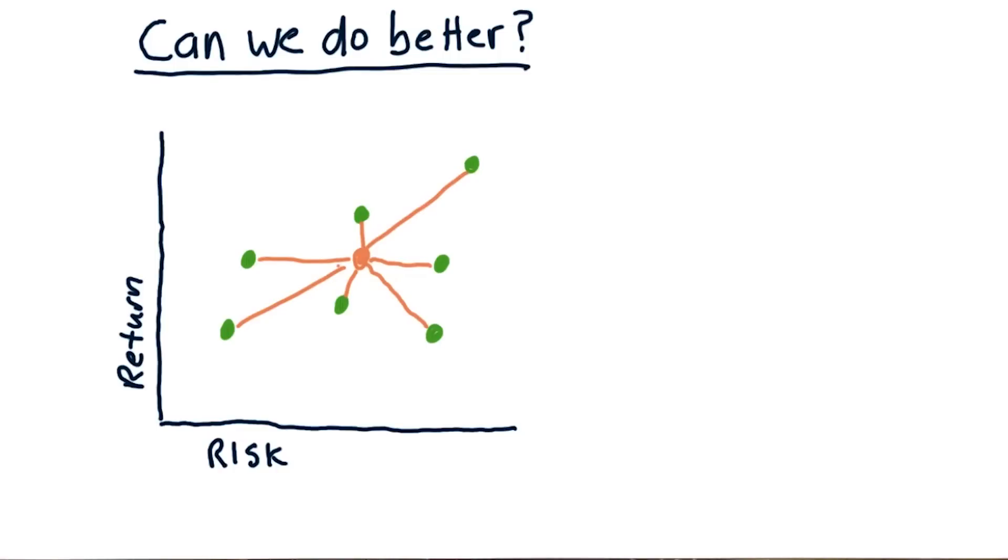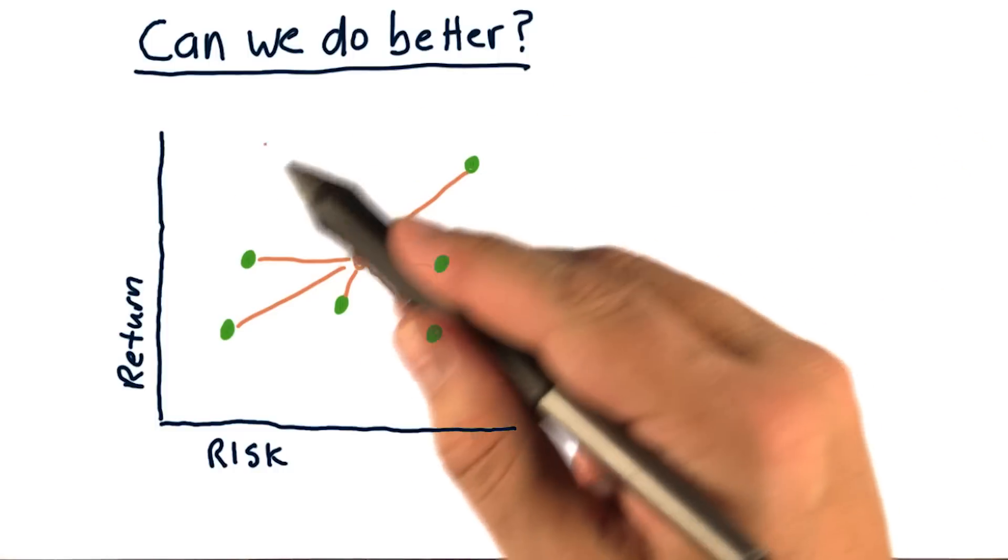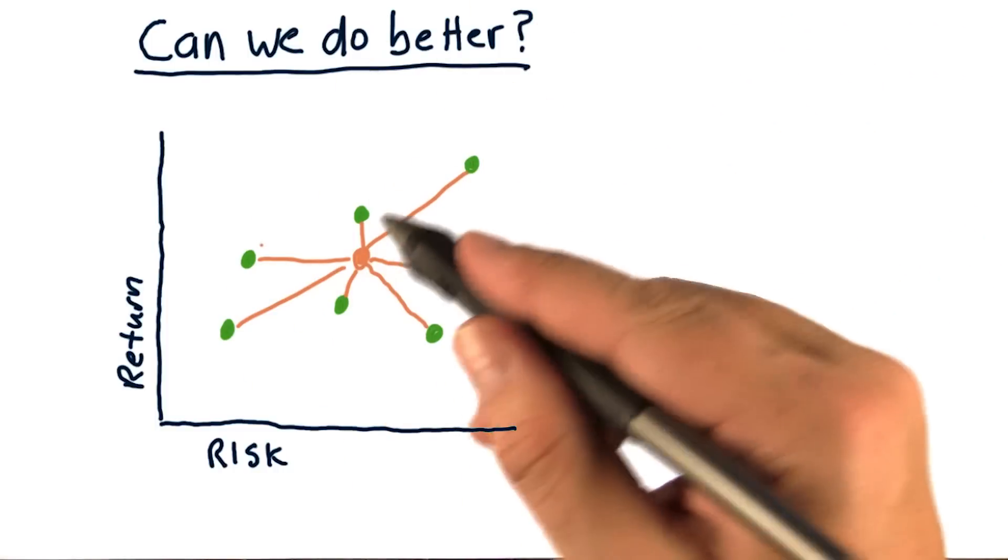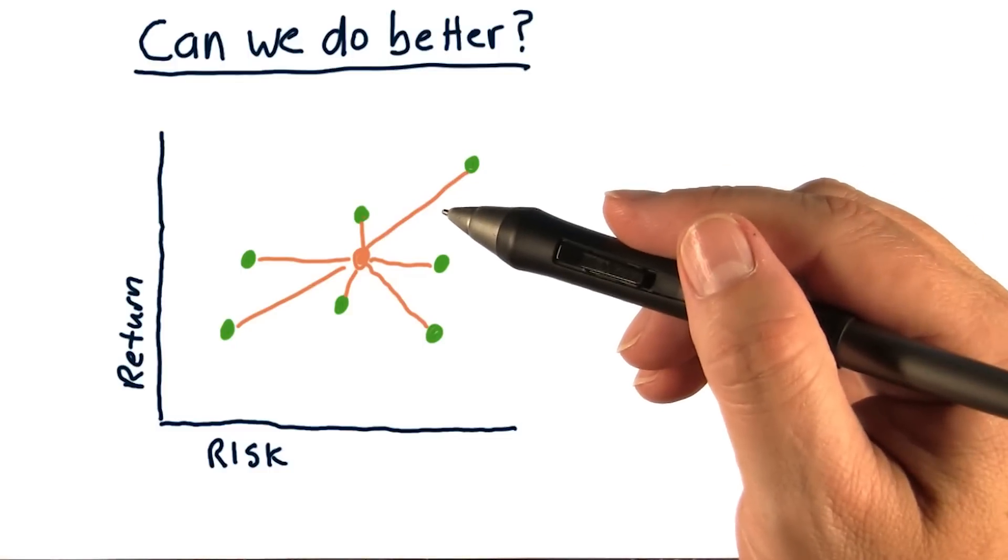So for quite a long time, people built portfolios this way. They would look at a bunch of assets, essentially equally weight them, and end up with a portfolio that behaves somewhat in between.